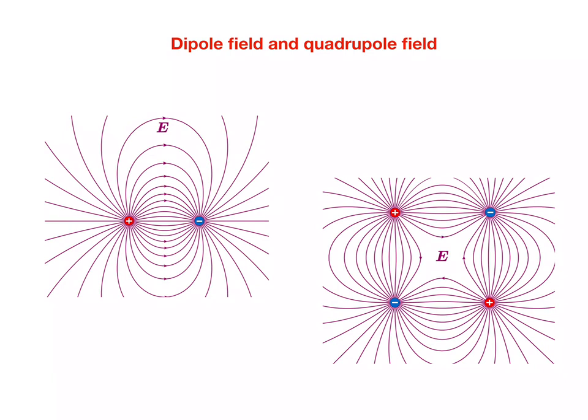Shown here are the field line patterns of a dipole and a quadrupole. The dipole is created when two point charges face each other. A quadrupole is the consequence of four point charges — two positively charged and two negatively charged. The two patterns illustrate that field lines indicate the field strength through their density. In contrast, electric field vectors point in the same direction as the field lines, but indicate the strength of the field through their length.